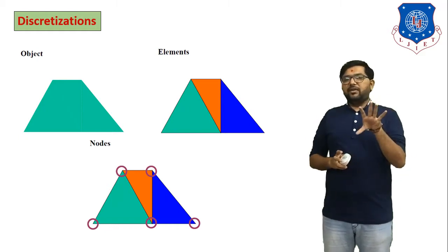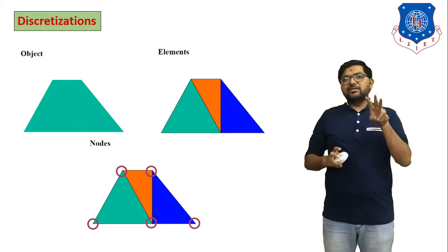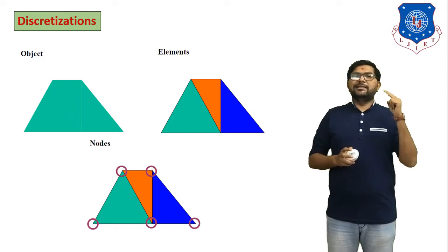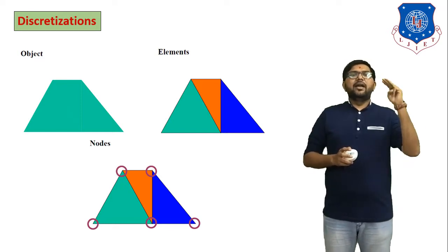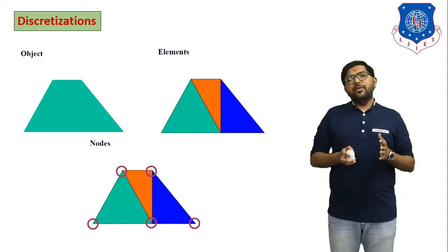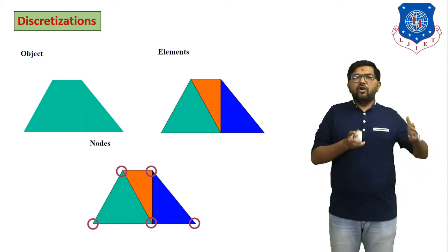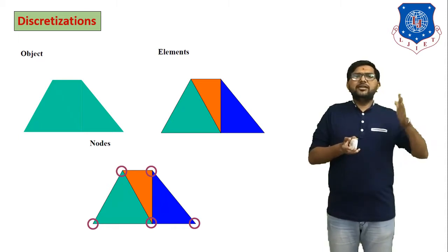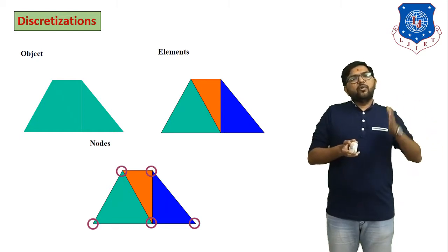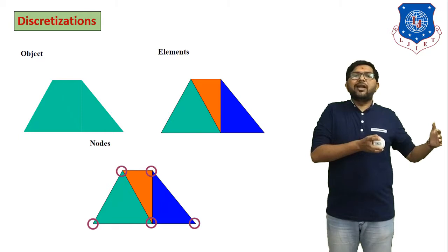Based on these three figures, we understand three definitions. First is Discretization. If we have any object and we divide it into a number of parts, the process of dividing this object is known as the Discretization Process.